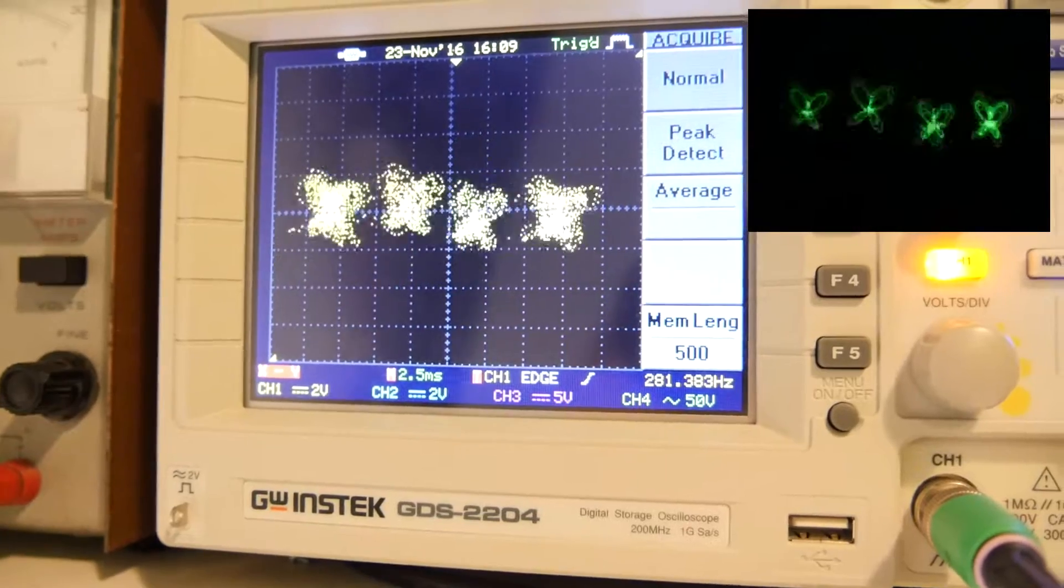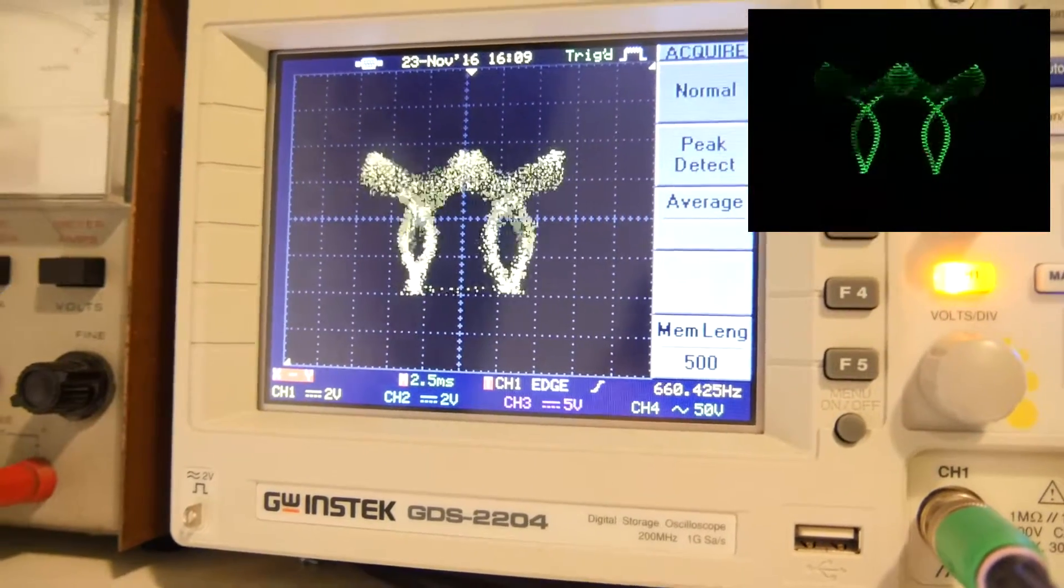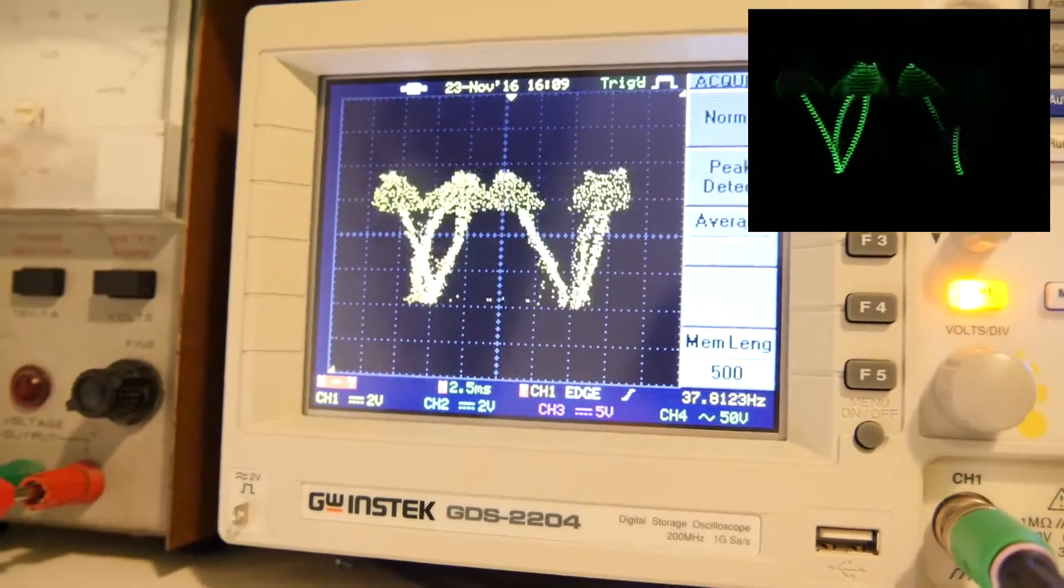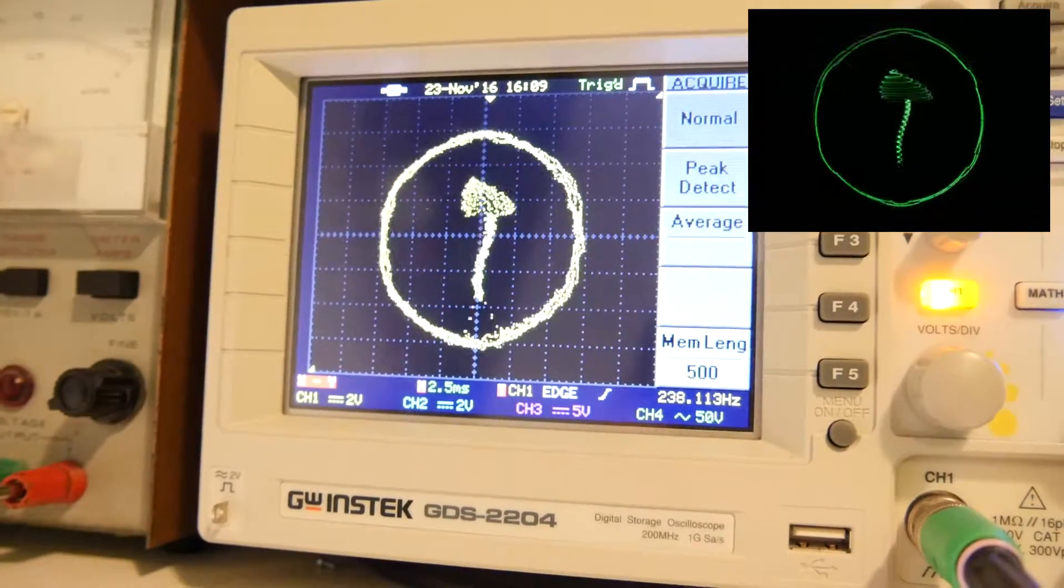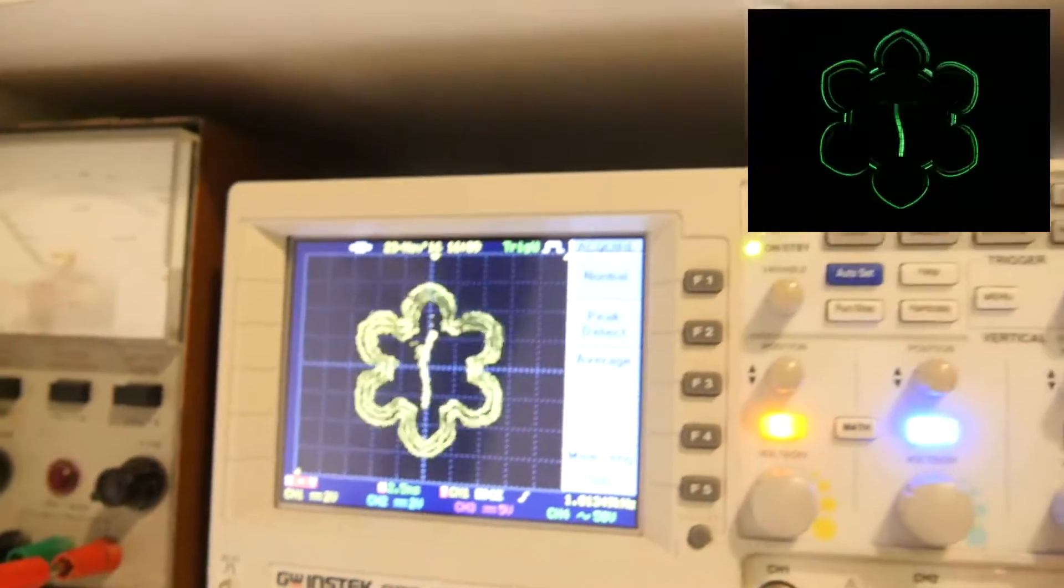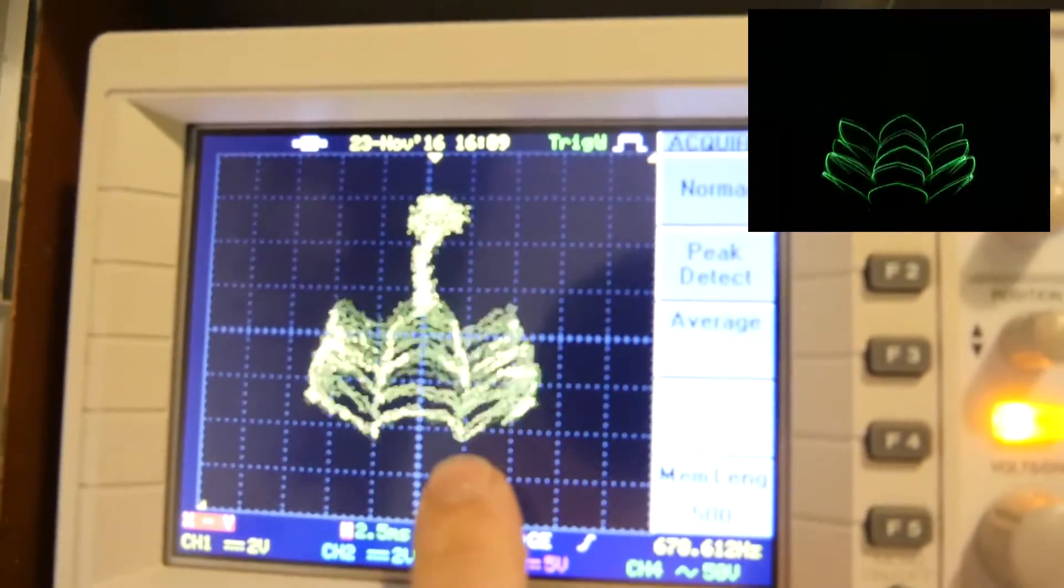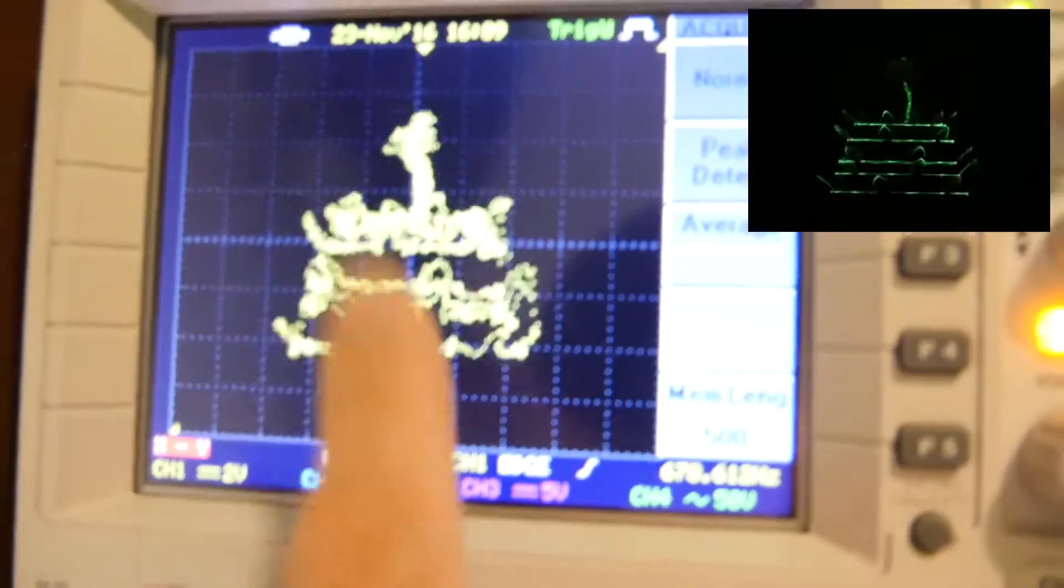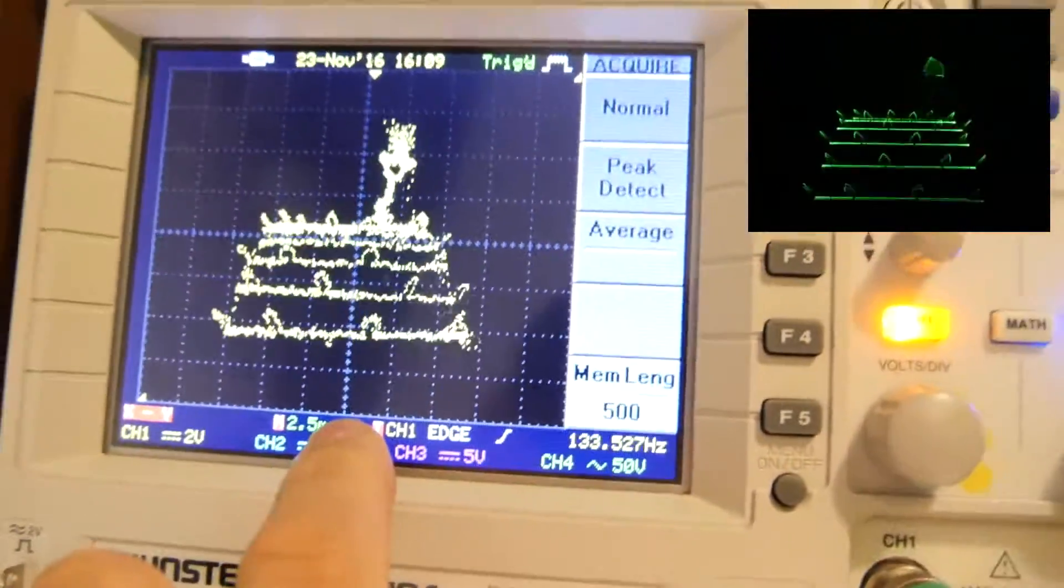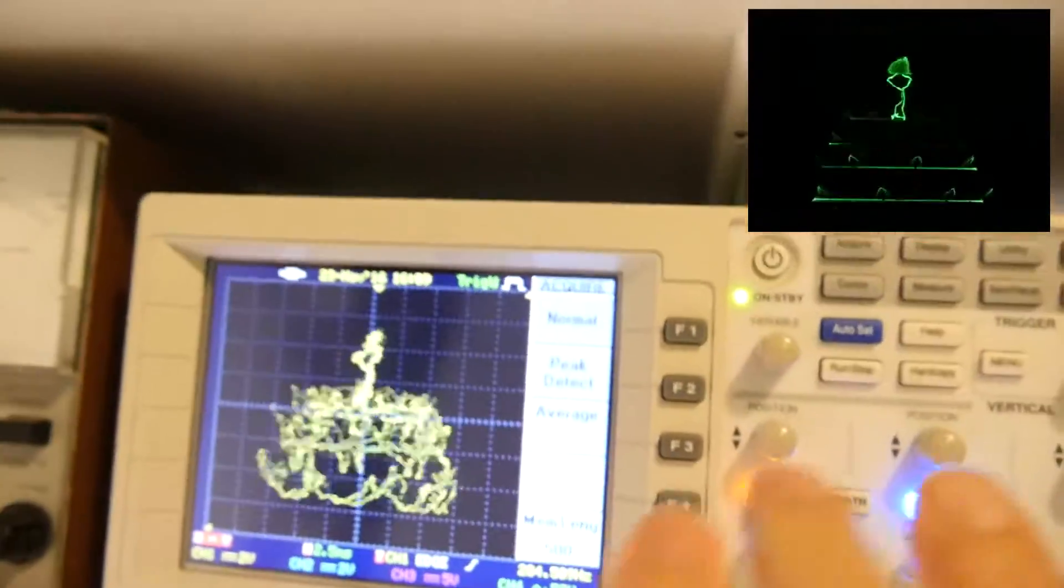It's not as sharp as a lot of the pictures you'll see on the internet because it's not something particularly high end and it's actually a digital storage scope so it does have different properties than regular oscilloscopes but you can see it's doing a 2D image.